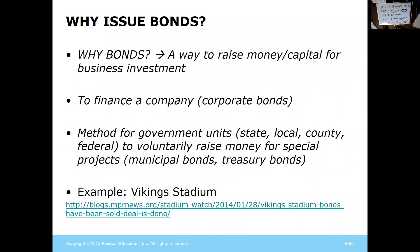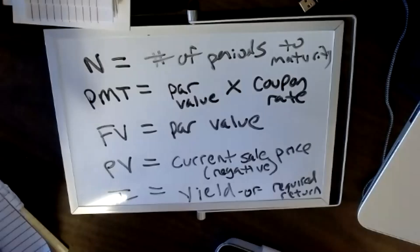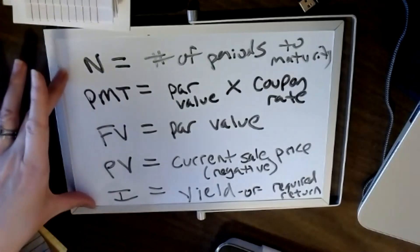Why would we issue bonds? It's a way to raise money for a business investment — we finance companies that way. The Vikings stadium is a good example: a public-private partnership where a government issued bonds to help a private entity build a facility deemed beneficial to people at large. Please ignore the formula on screen and instead use the TVM function on your calculator — it's much more reliable with less room for error.